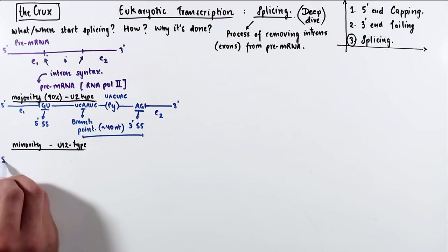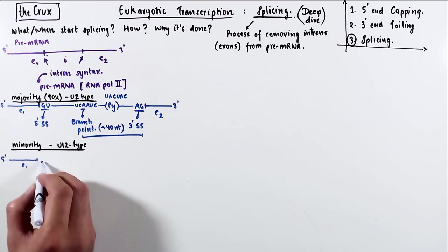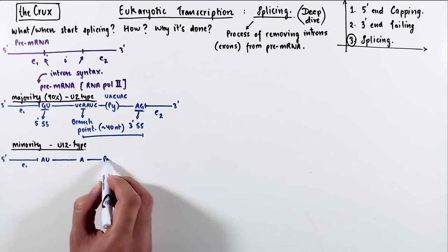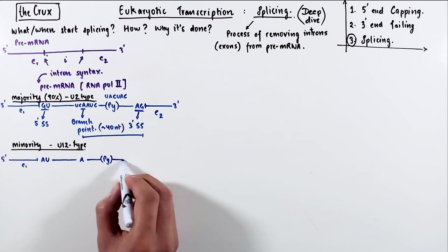In this type of introns, the 5' splice site has AU instead of GU. The branch point and the pyrimidine stretch is very similar, and the 3' splice site has AC instead.